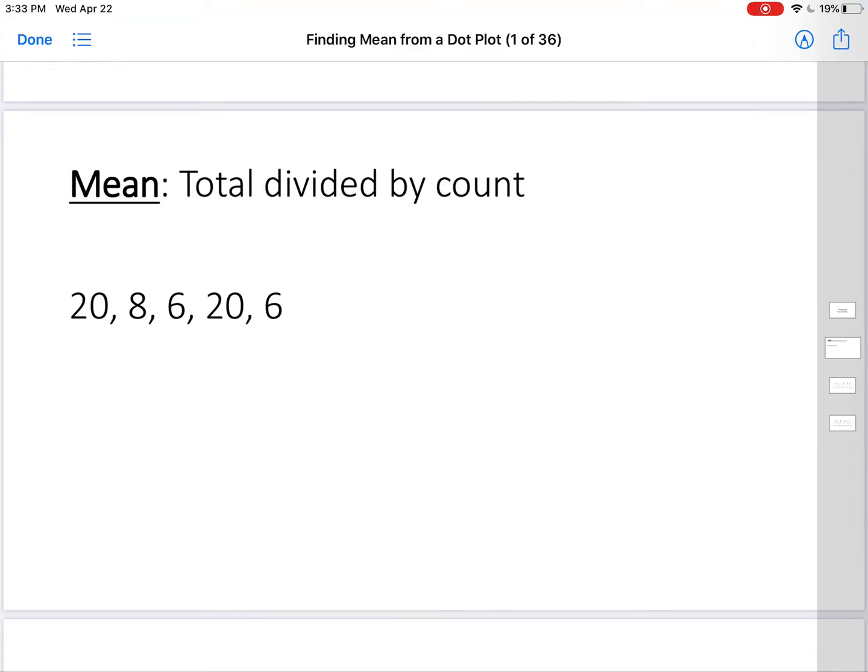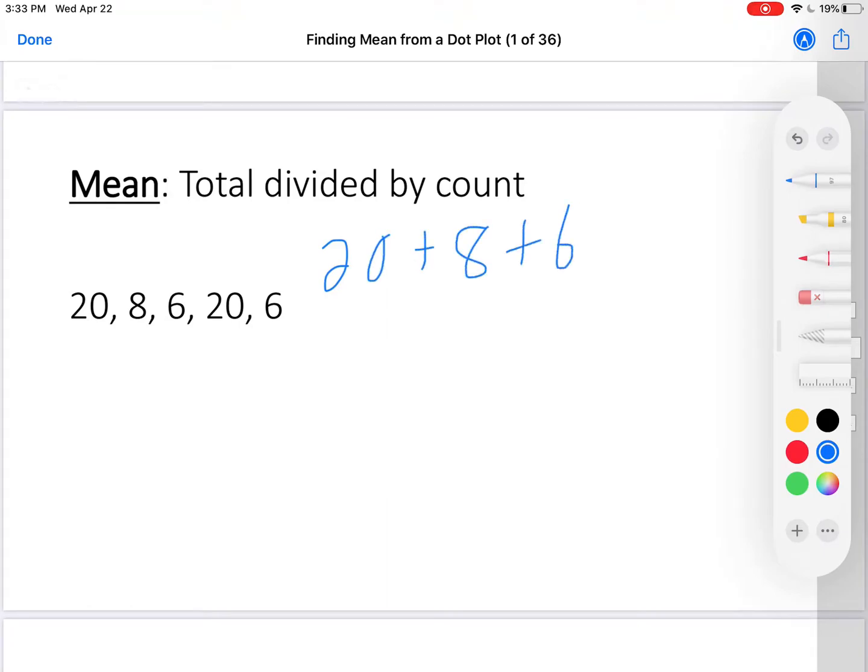20 on Monday, 8 on Tuesday, 6 on Wednesday, 20 on Thursday, 6 on Friday. Let's find the mean of the number of cookies that I ate each day this week. First I need the total.